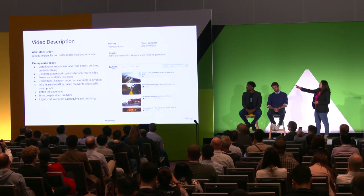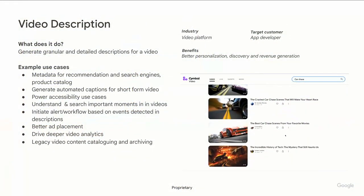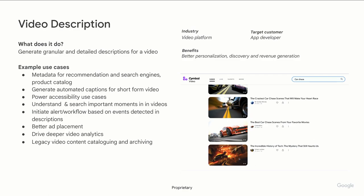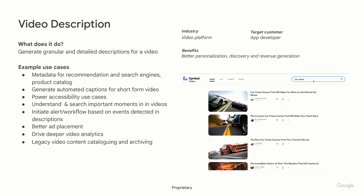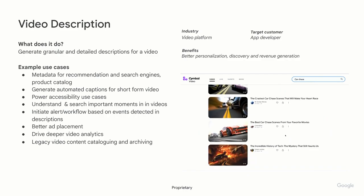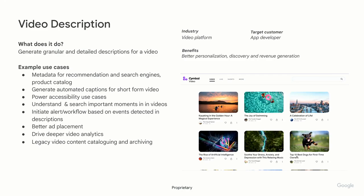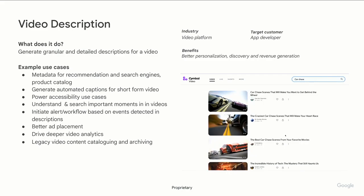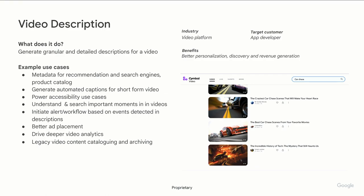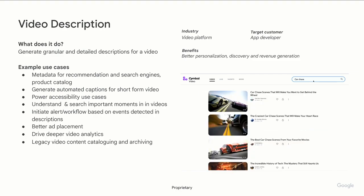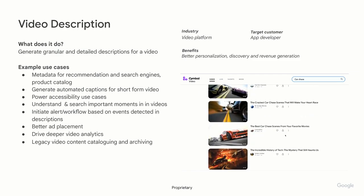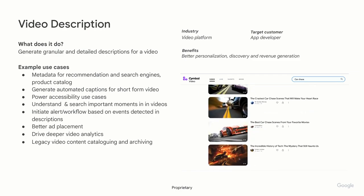Let's take an example on the right. Today, when you go to any video platform and type in a search — like 'car chase' — typically the videos that come up will either have 'car chase' in the title or the description. But with video description, it will also show videos which don't have that term in the title or description, but may actually have a scene of a car chase in it. So this is very powerful from a relevancy perspective.